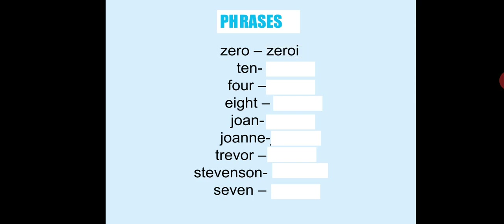Common number pronunciations: 'zero' is pronounced 'zeroy,' 'ten' is 'tin,' 'four' is 'foah,' and 'eight' is 'ait.' So foah, zeroy, ait. This is very difficult because credit card numbers, passport numbers, and receipt numbers are very common in part one of your listening test. You have to recognize them accurately and take down notes in the process.